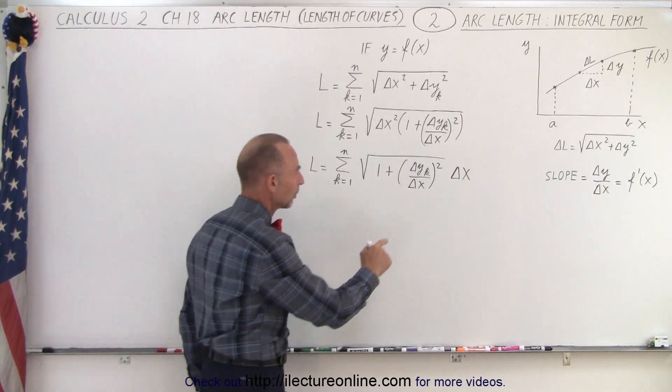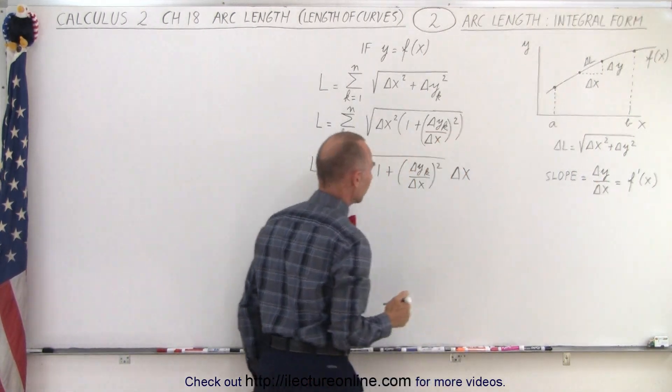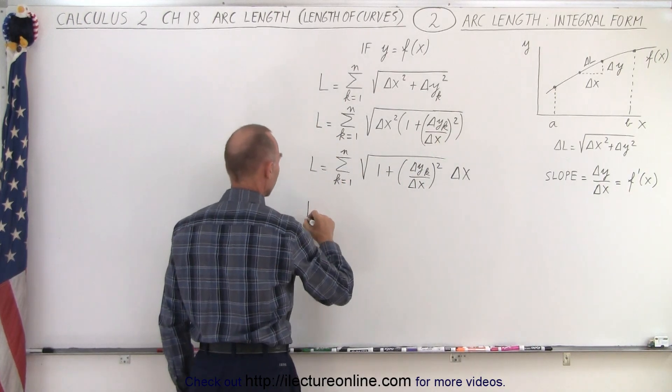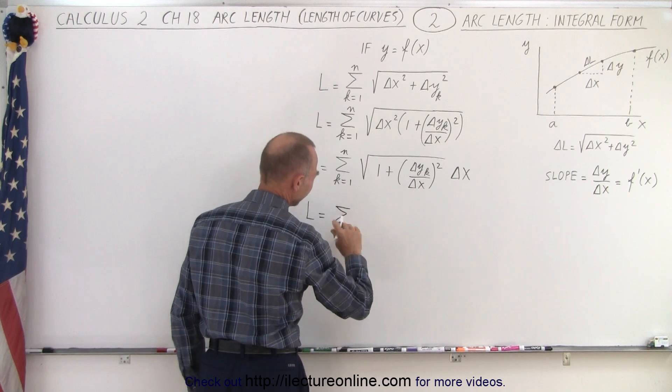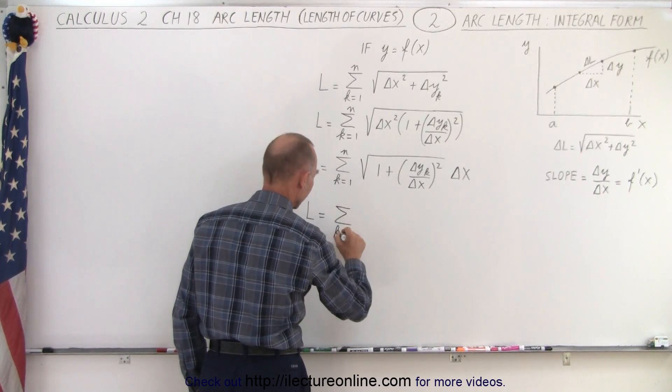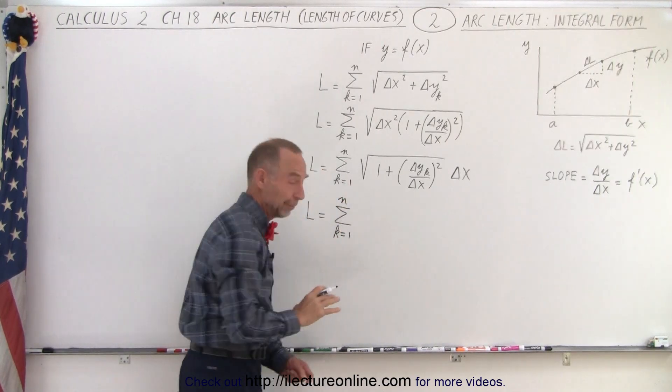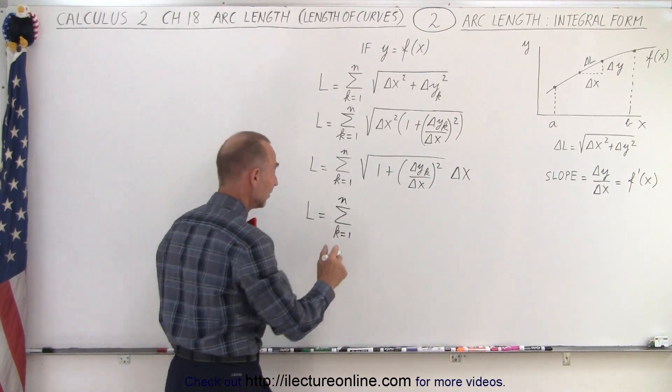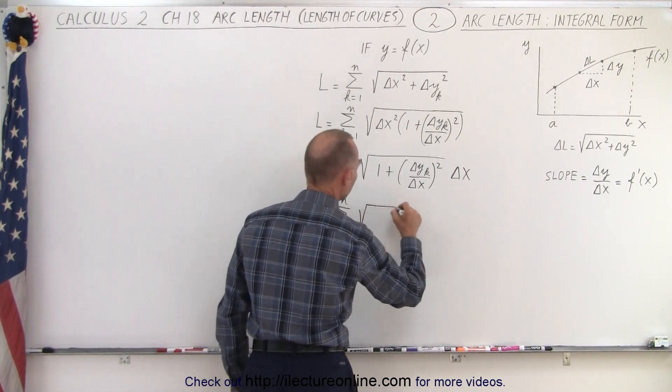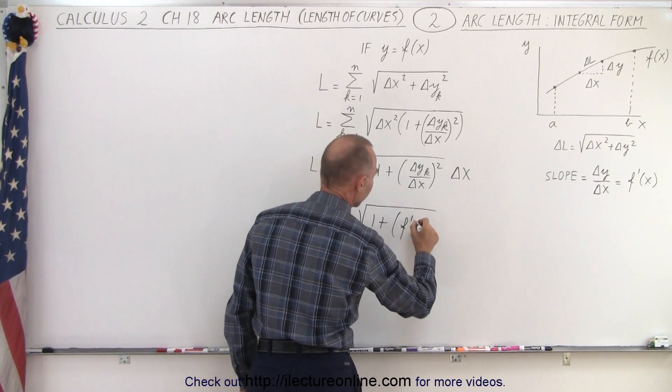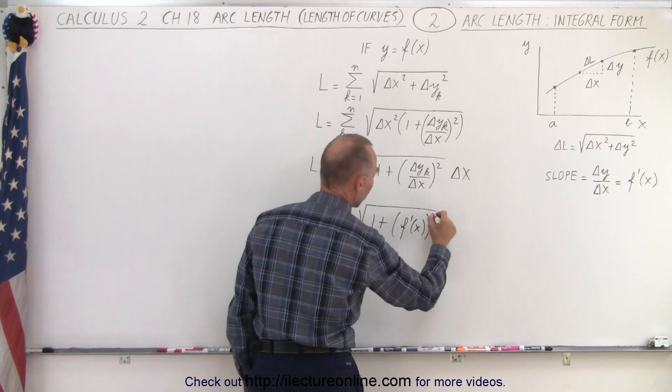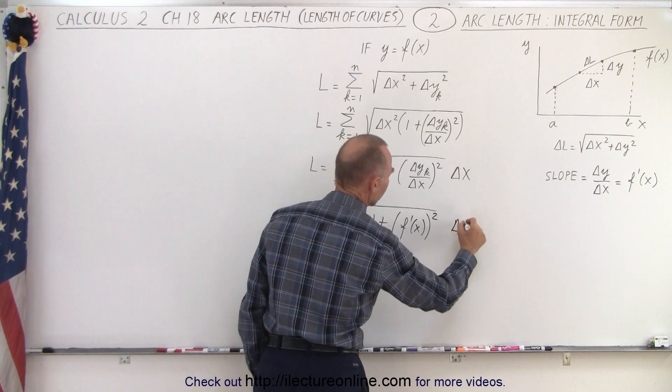Now we're going to replace this by the derivative of the function. So now we can write that L is equal to the square root of the infinite sum of, well, not necessarily yet the infinite sum, but from k equals 1 to n, depending on, of course, how big n is, equal to the square root of 1 plus the function, the derivative of the function of x squared times delta x.